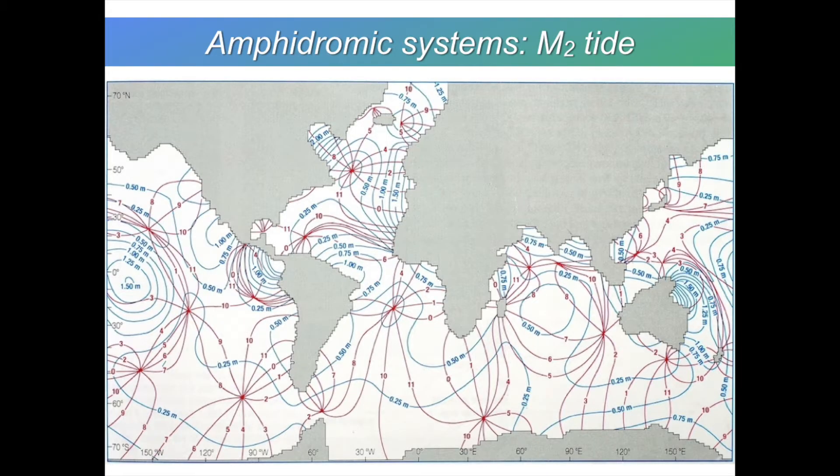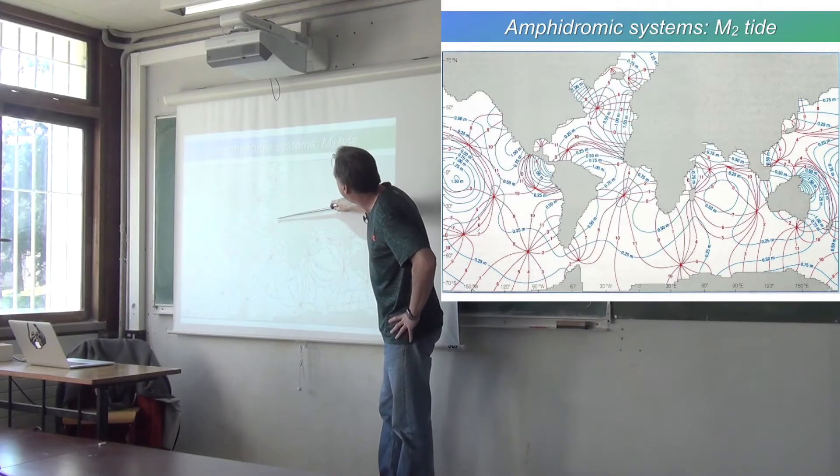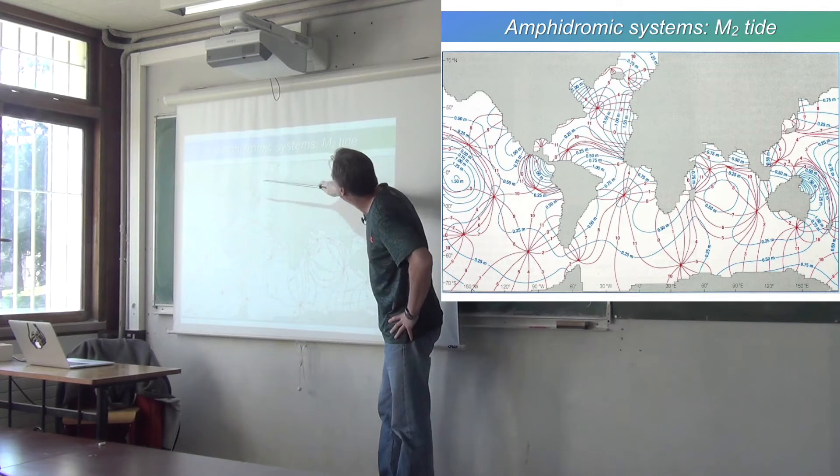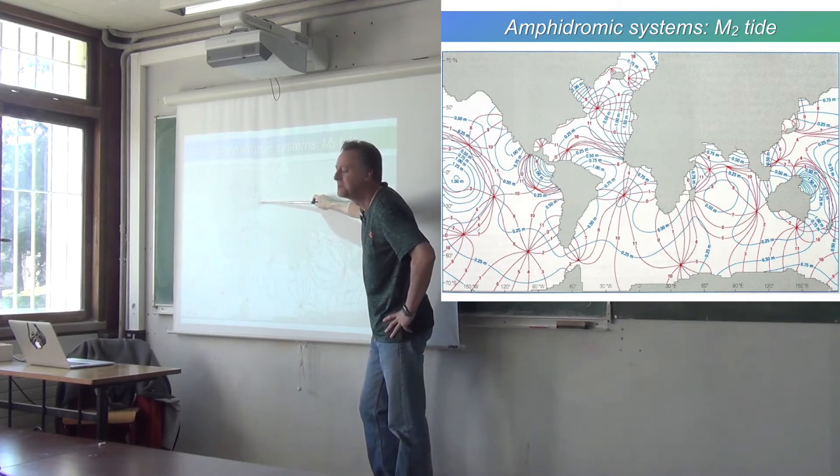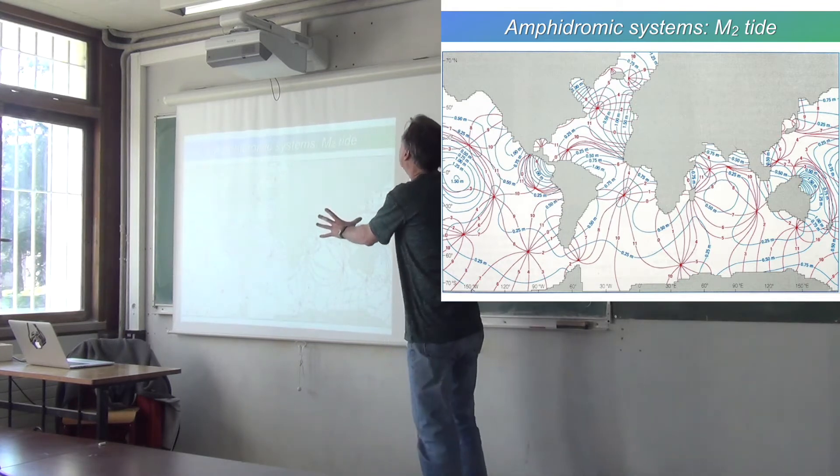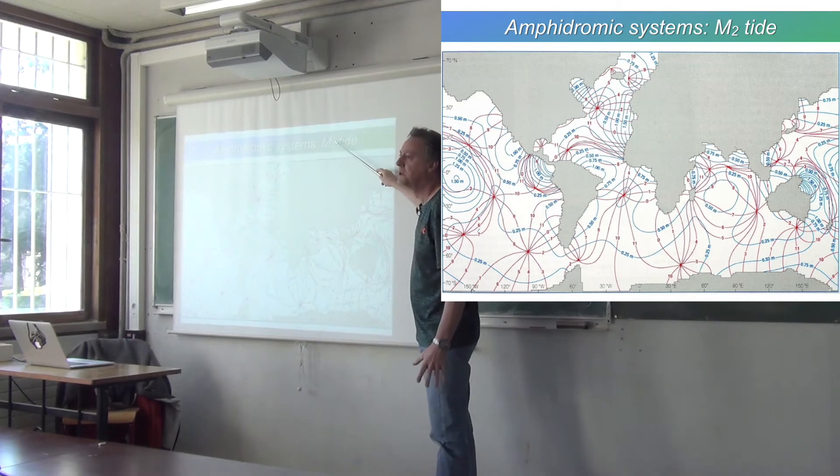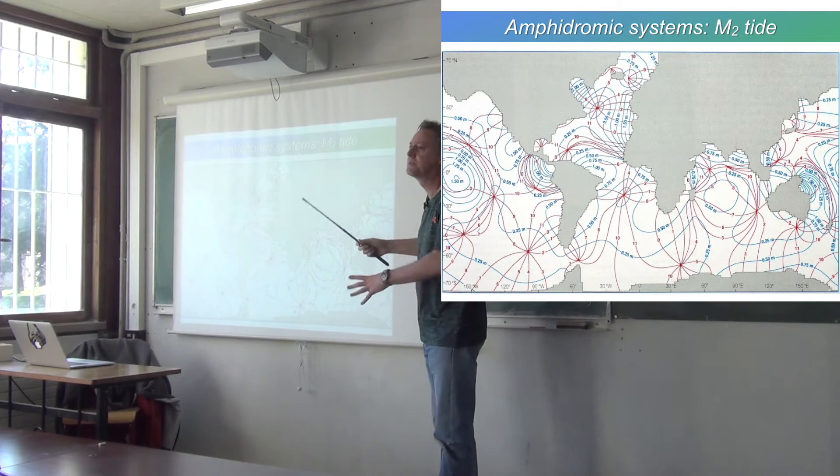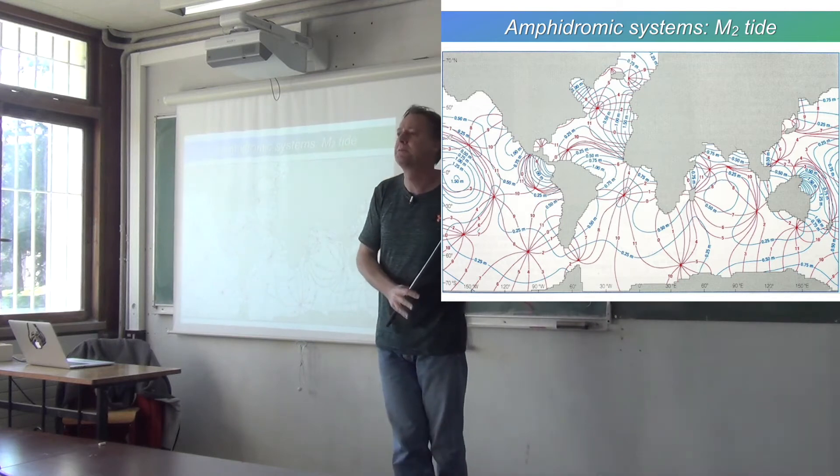And this is the kind of map that you draw. So the blue lines are amplitude and the red lines are phase. And what we have is maximum amplitudes are close to the coasts, generally speaking. And then you do have these points where the amplitude is zero. Now, this map has been drawn for the semidiurnal lunar component, the M2 tide.